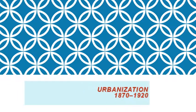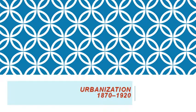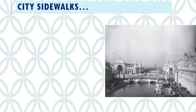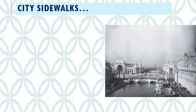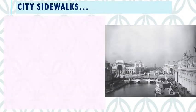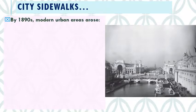Welcome to lecture 18 on urbanization between 1870 and 1920. By about 1890, we've got the modern America that we know today urban-wise. Most of American history to this point had been pretty rural, based around farming and small communities.